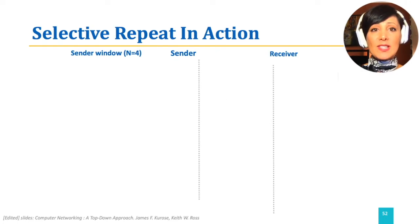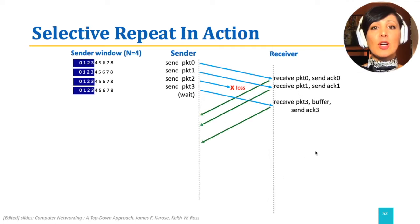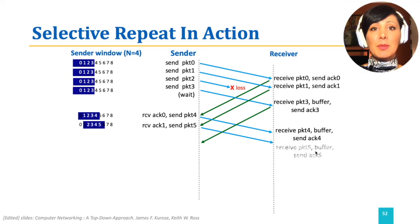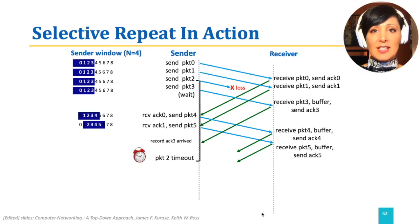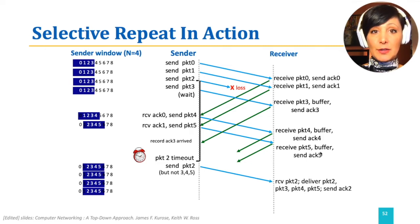Assume we have a window of size 4. This means the sender could have 4 unacknowledged packets on the fly. It sends packets 0 to 3 and waits for acknowledgments. If a packet — for example packet number 2 — is lost, but packets 3, 4, and 5 are received, they are acknowledged individually but not delivered to the upper layer. When packet 2's clock times out, only packet 2 is resent. At that time, packets 3, 4, and 5, which were buffered at the receiver side, could be delivered to the upper layer.